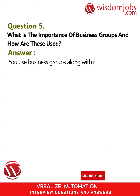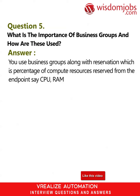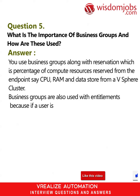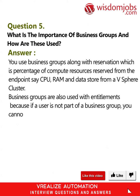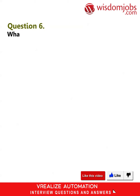Question 5: What is the importance of business groups and how are these used? Answer: You use business groups along with reservations, which is the percentage of compute resources reserved from the endpoint — such as CPU, RAM, and datastore from a vSphere cluster. Business groups are also used with entitlements, because if a user is not part of a business group, you cannot entitle them to deploy a blueprint via service catalog.